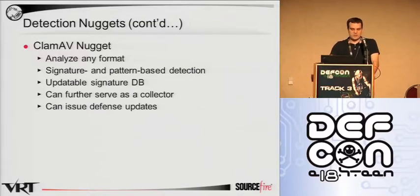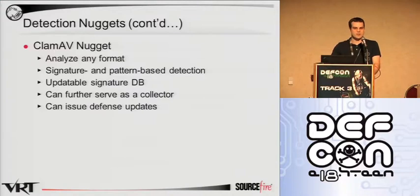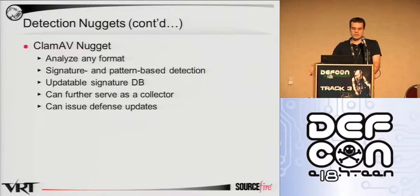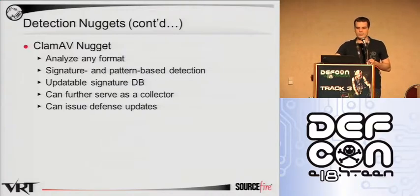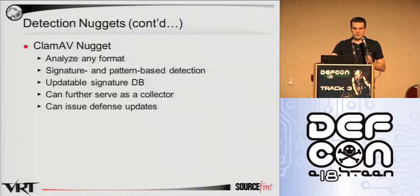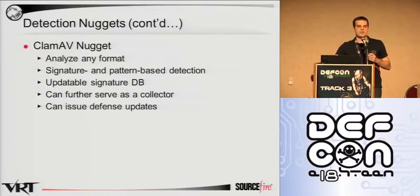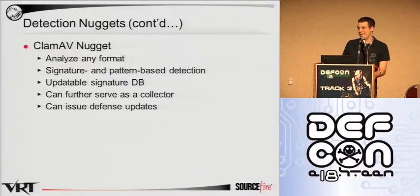ClamAV is an open source antivirus that can analyze any format. It offers signature-based, pattern-based detection in the form of NDB and LDB files, but you can also write your own C code for it. It has a bytecode interpreter and an updateable signature DB — you can update it yourself or run Fresh Clam to grab fresh signatures from an online database. It can also serve as a collector and issue defense updates, so if a file is found to be bad, a signature can be generated on the fly and added to the DB so ClamAV will alert on any future encounters with that file.